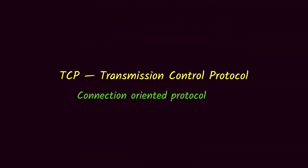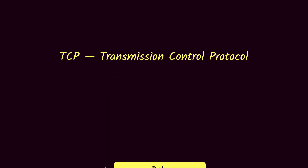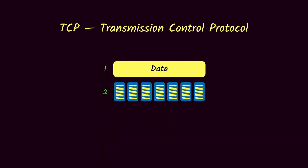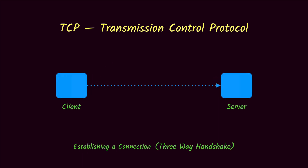First, we have TCP, or Transmission Control Protocol. TCP is a connection-oriented protocol. By connection-oriented, we mean that after the transport layer receives data from the application layer and breaks it down into packets, it has to establish a connection with the server before packet transmission can start. To establish a connection, the client and server share a couple of packets called a three-way handshake.